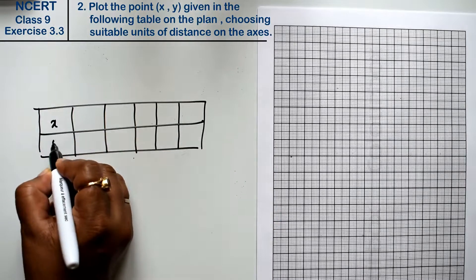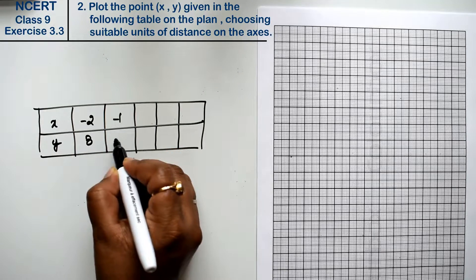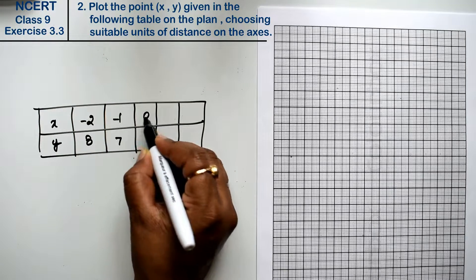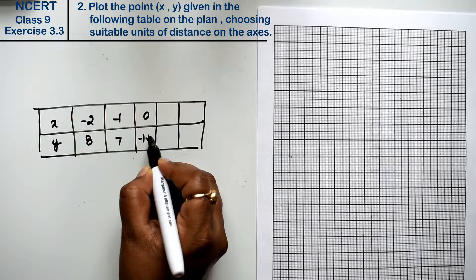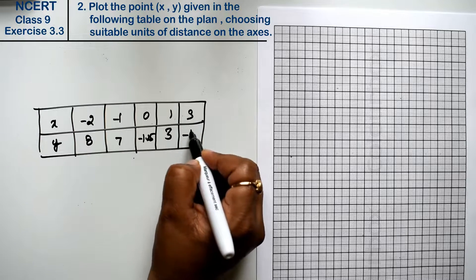x, y is written in this graph. Minus 2 and 8. Minus 1 and 7. 0 and minus 1.25. 1 and 3. And 3 and minus 1.